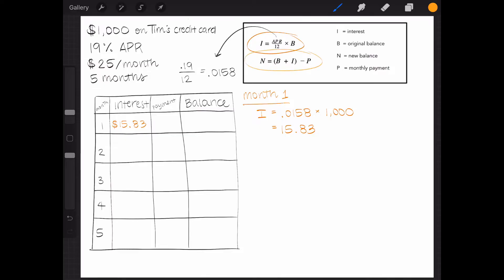Now I can use the second formula to calculate the new balance. I first need to add the original amount owed to the interest owed, so $1,000 plus $15.83 equals $1,015.83.